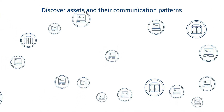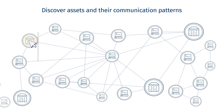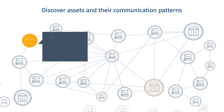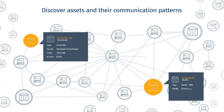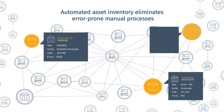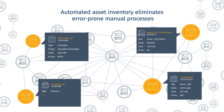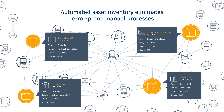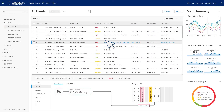Tenable automatically detects all the assets in your OT network and maps out their communication patterns. Tenable.ot continuously provides detailed information on every device, including model, firmware versions, open ports, and patch levels, even when the data is not available by monitoring network activity.